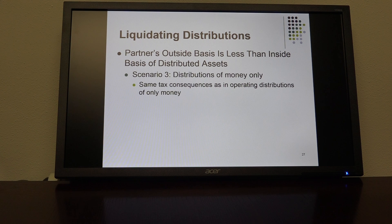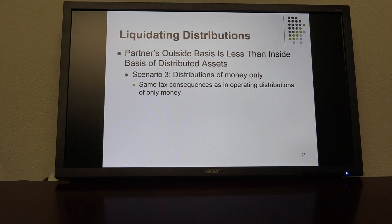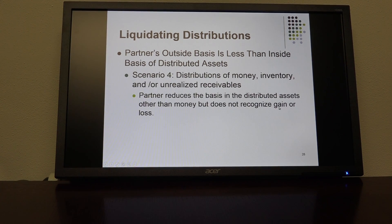You can see at the bottom the total allocation: the initial basis, then we include the appreciation from step two, and then the allocation from step three.